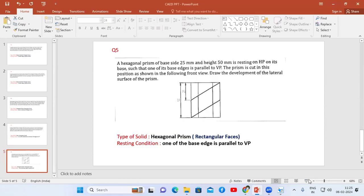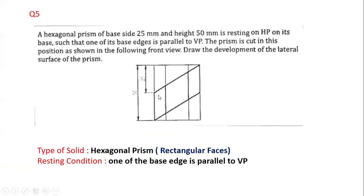Hi, I am Mohan. In this video I am going to explain the development of lateral surface of solids. This question is chosen from a VTU model question paper. The problem is a hexagonal prism with base side 25mm and height 50mm, resting on its base such that one of its base edges is parallel to VP. The prism is cut as shown in the front view and we have to draw the development of the lateral surface of the prism.